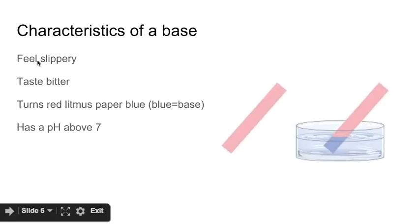The characteristics of a base: they feel slippery, they taste bitter. You should not taste bases in a chemistry lab. That's very dangerous. They're kind of the opposite from acids when we're talking about litmus paper. So a base will turn red litmus paper blue. Remember, acids were the other way around. They turned blue litmus paper red. And this helps me remember blue equals base. So if it turns blue, you have a base. And it has a pH above 7.